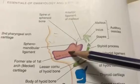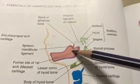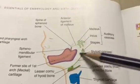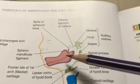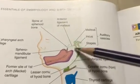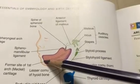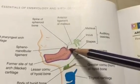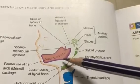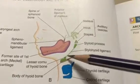The nerve of the first arch is the trigeminal nerve — it is the mandibular arch. It supplies the muscles of mastication: temporalis, masseter, lateral pterygoid, medial pterygoid, along with the anterior belly of digastric, mylohyoid muscle, tensor veli palatini, and tensor tympani. These are the muscles of the first arch.